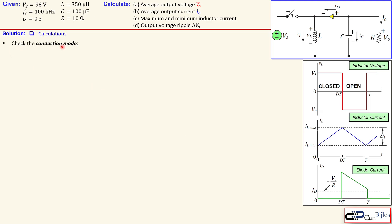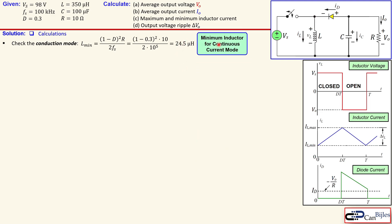First we check the conduction mode. We already said this will be continuous current mode, but let's verify it. Using the formula for minimum inductor value required for CCM, substituting the duty cycle, resistor, and switching frequency gives 24.5 microhenries. Our inductor is 350 microhenries, which is way above the minimum required, so the inductor current is indeed continuous.